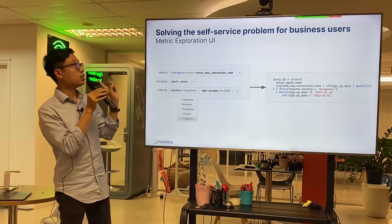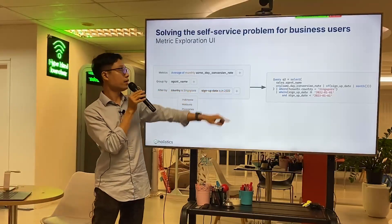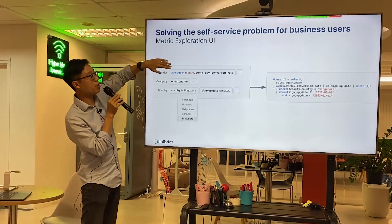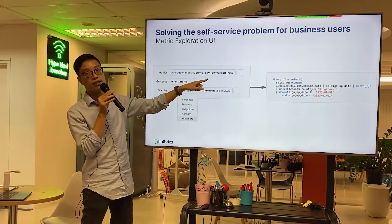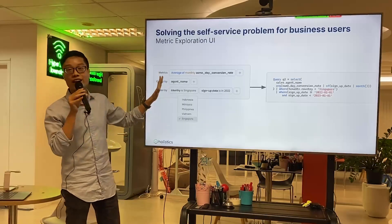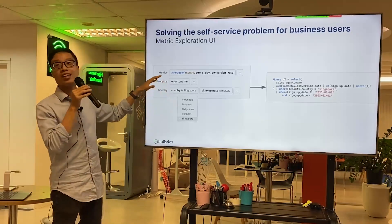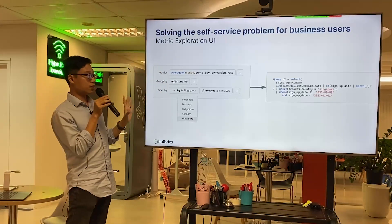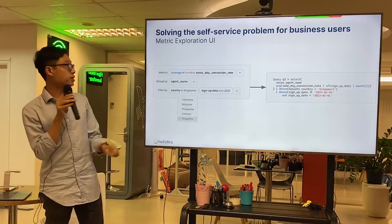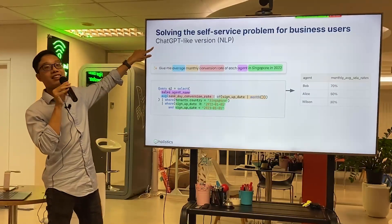This also enables self-service. You can build a UI on top where users pick a metric from a dropdown, choose the aggregation type, select a time grain (daily, monthly, weekly), choose a GROUP BY dimension, and apply filters — and get results. This is how your life changes when you move from model-based to metric-centric thinking.